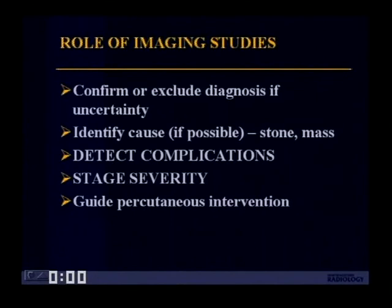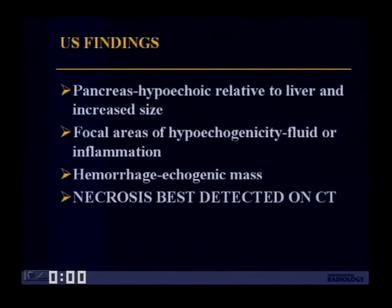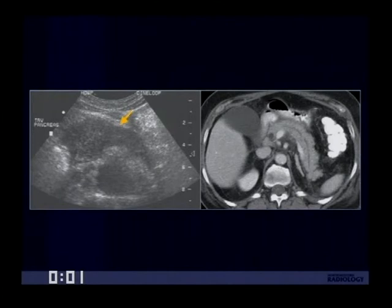On ultrasound, the pancreas with pancreatitis is hypoechoic relative to liver and increases in size. You may see areas of focal hypoechogenicity or hyperechogenicity. The hypoechogenicity is typically when there is fluid or inflammation, and there may be increased echogenicity in the presence of hemorrhage. But most importantly is the detection of necrosis, which is best detected on contrast-enhanced CT. Here's an example: the image on the left is a patient with a hypoechoic enlarged pancreas, and the image on the right is a patient with interstitial edema due to pancreatitis with enlargement of the pancreas and some surrounding inflammation.